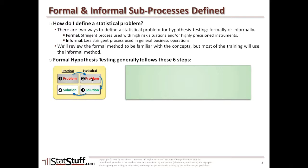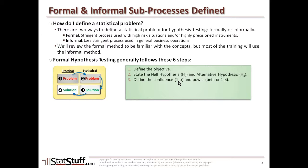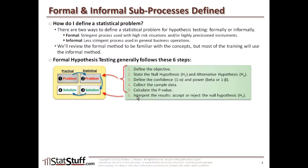Formal hypothesis testing generally follows six sub-steps. Looking at our model, we start with a practical problem, convert it to a statistical problem, then translate it to a statistical solution interpreted into a practical solution. The first sub-step is defining the objective, then stating the null hypothesis H₀ and alternative hypothesis Hₐ, then defining confidence (one minus alpha risk) and power level (one minus beta risk), then collecting sample data and calculating the p-value. These make up defining the statistical problem. The final step is interpreting results — deciding whether to accept or reject the null hypothesis.